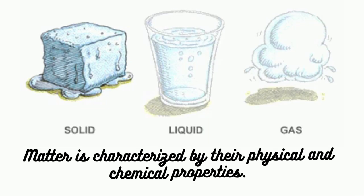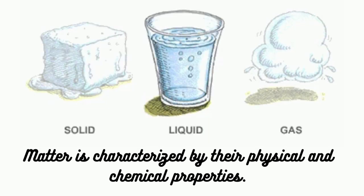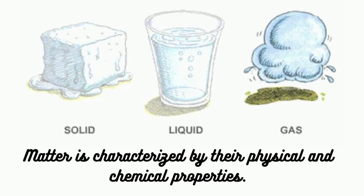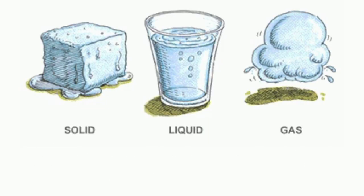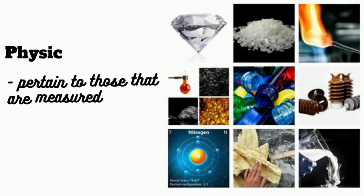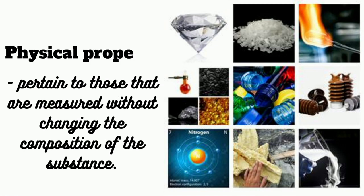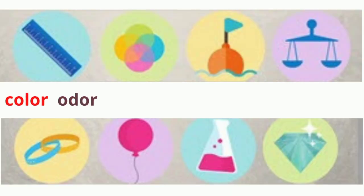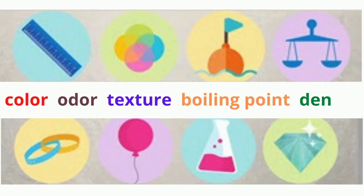Matter is characterized by its physical and chemical properties. Physical properties pertain to those that are measured without changing the composition of the substance. These include color, odor, texture, boiling point, density, etc.